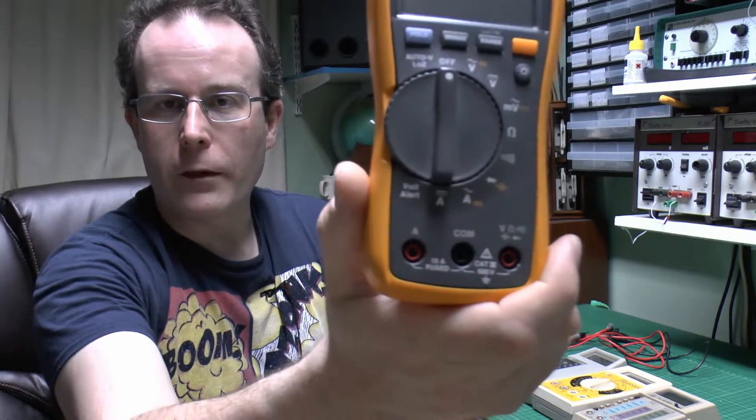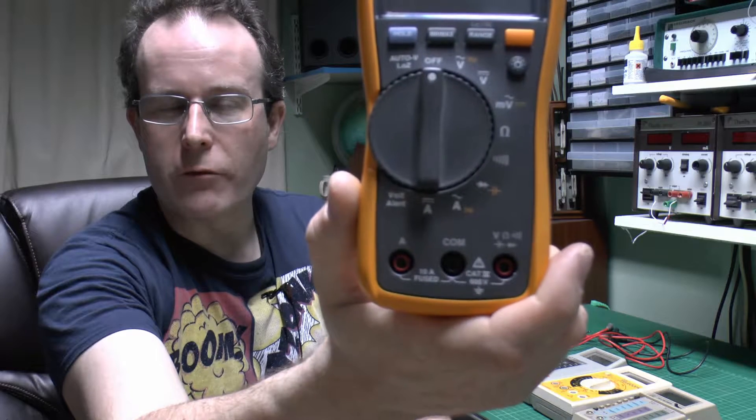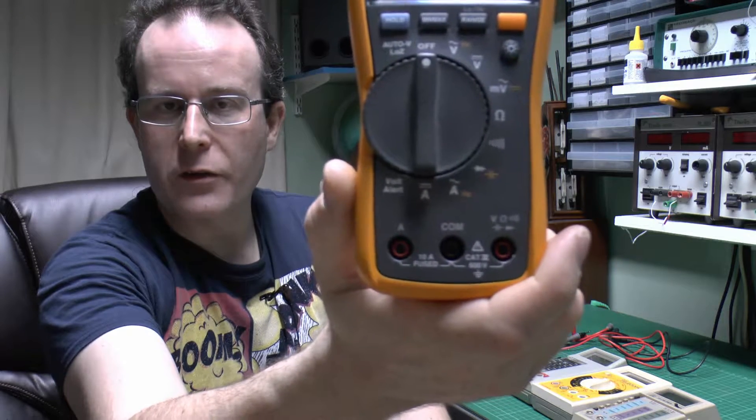Hello, I'm JW and in this video we're going to have a quick look at measurement categories. Now you've probably seen these on multimeters and other devices, and have a look at the bottom of this particular one. See at the bottom there it says the rating is 600V and it also says CAT3.